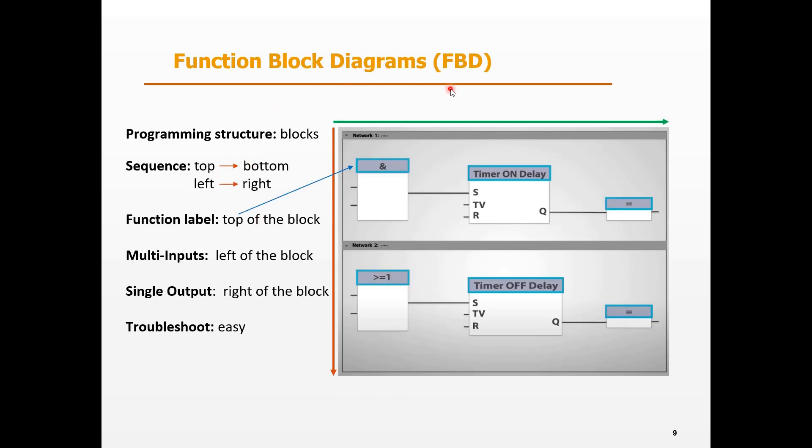Next, the FBD is also a common programming language of PLC. The programming structure is built with function blocks. The sequence is from top to bottom and left to right. Each block's function is labeled on the top of the block. There can be multi-inputs on the left of the block and there's only a single output on the right of the block. With FBD, it's easier to follow and troubleshoot the machines.